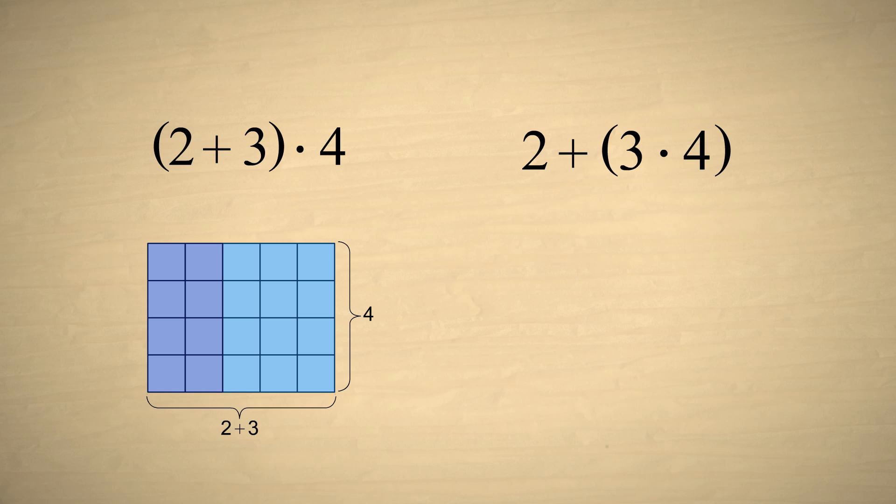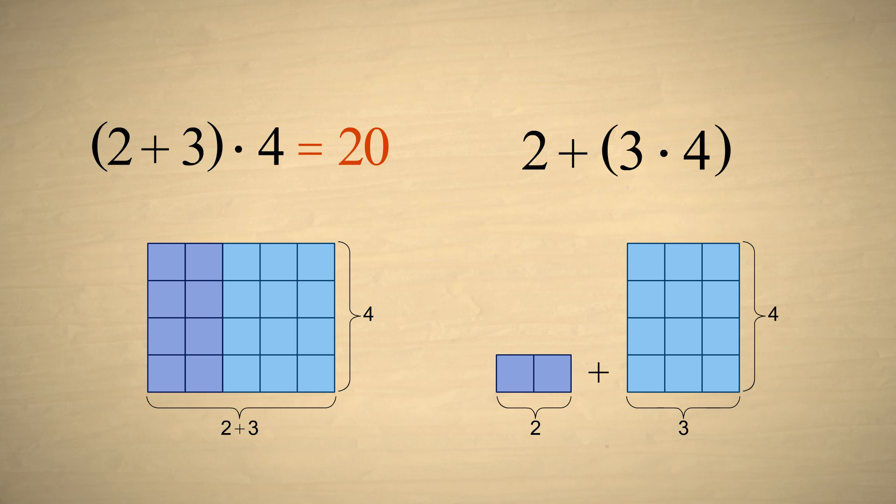In the second case, the parentheses are around the 3 times 4, so the multiplication is performed first, and then 2 is added to the result. The result in the first case is 20, while the result in the second case is 14. So the order of addition and multiplication does matter. The associative property does not apply to combinations of addition and multiplication.